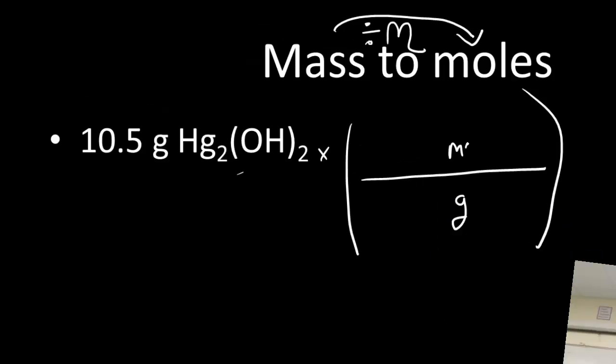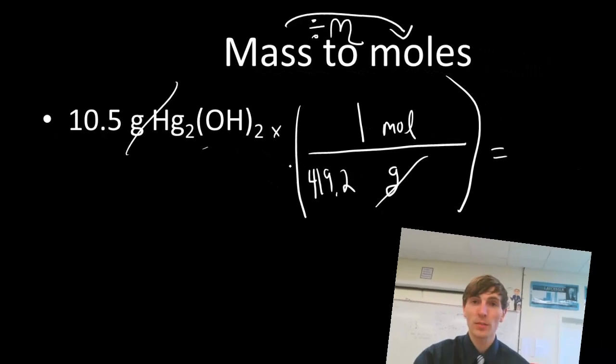I need grams to cancel. I need to get to moles. That number of grams off the periodic table is always per one mole. If you're always putting a one next to the mole, it's good practice because the quantities and conversions we're dealing with have a one there. So I write out 419.2 grams per one mole. Grams cancel.